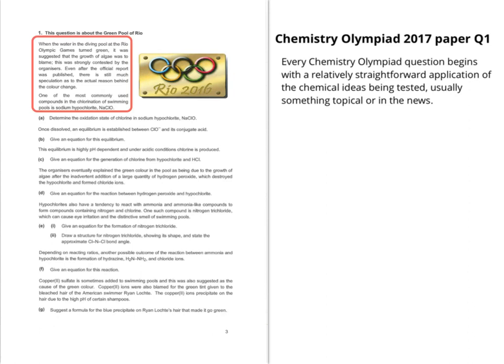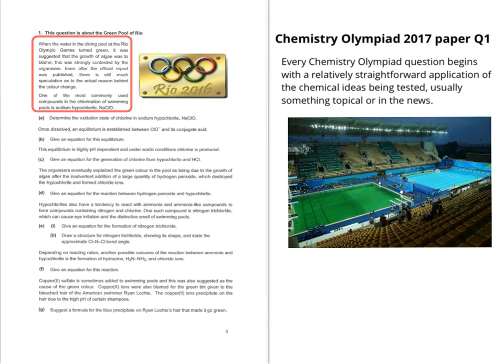Every single Chemistry Olympiad question usually starts with something straightforward, which is an application of A-level chemistry ideas, and it's usually something that's in the news or topical to that time. In the 2017 paper, we'd had the Rio 2016 Olympics the year before, and one notable thing was the colour of the pool. You can see clearly that one of the pools is much greener than the other. Initially this was thought to be due to algae growth, but this was strongly contested by the organisers, as you can see in the question.